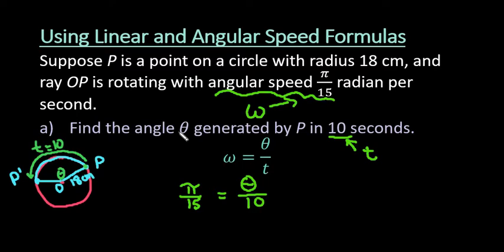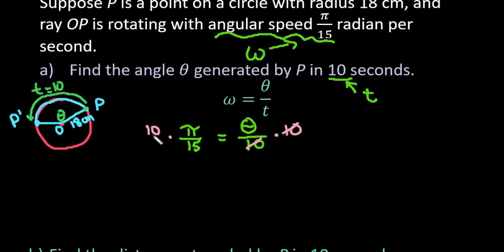So now what we need to do is we need to get theta by itself. So I would multiply both sides by 10 to cancel this out. And on the left-hand side, what I'm going to do is I'm just going to simplify this. I'm going to go ahead and write theta first just so that we have the angle measure written first. And I can reduce the 10 over 15 because 5 goes into both of these, so this becomes 2 over 3. So our exact answer would be 2 thirds pi radians.